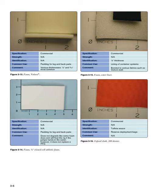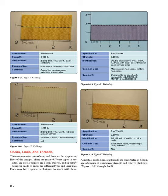Cords, Lines, and Threads: The most common uses of cord and lines are the suspension lines of the canopy. There are many different types in use; today, the most common are nylon, Dacron, and Spectra. The rigger needs to know the different types and their uses, as each may have special techniques to work with them. Almost all cords, lines, and threads are constructed of nylon, because of its inherent strength and relative elasticity.